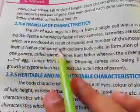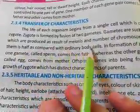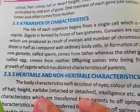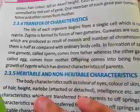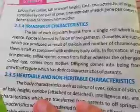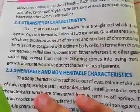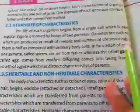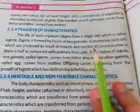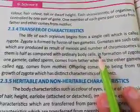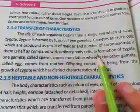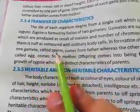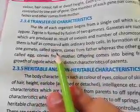अच्छा, आपके zygote इसना से पैदा होते — जब meiosis का procedure होता है, number of chromosomes जब double होते हैं, एक दूसरे के साथ coordinate करते हैं, और ordinary body cells के साथ इसके result में zygote produce होता है।